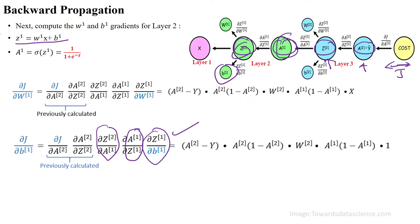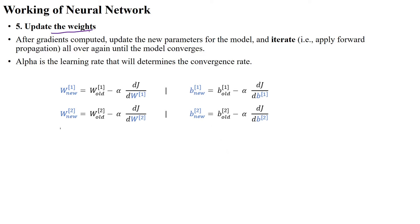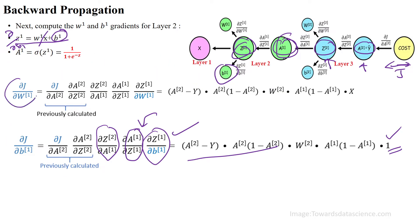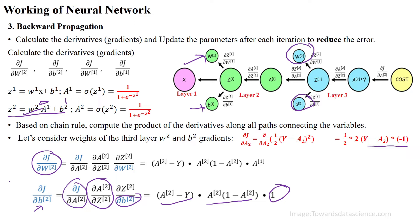For b1, applying ∂g1/∂b1 — the w1·x term becomes 0 and the bias b1 term becomes 1. The full gradient chain for b1 is: ∂J/∂a2 × ∂a2/∂g2 × ∂g2/∂a1 × ∂a1/∂g1 × ∂g1/∂b1. We then update the weights using: new_weight = old_weight − α × (∂J/∂w), where α is the learning rate.